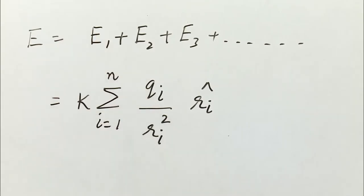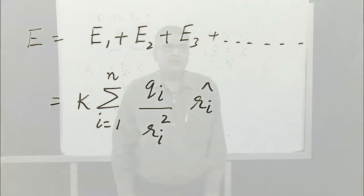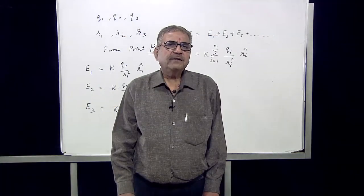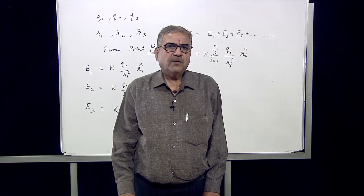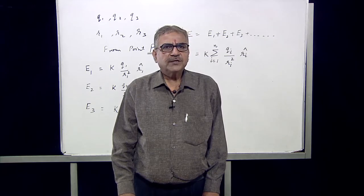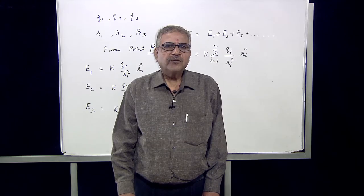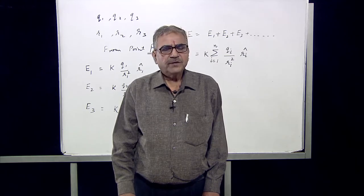Here, Ri cap is the unit vector directed from the i-th charge to the point P. So we have found the expression for the electric field due to a system of discrete charges, given by this relation. Today we have defined electric field, found the electric field due to a charge at rest, and also found the expression for a system of discrete charges.